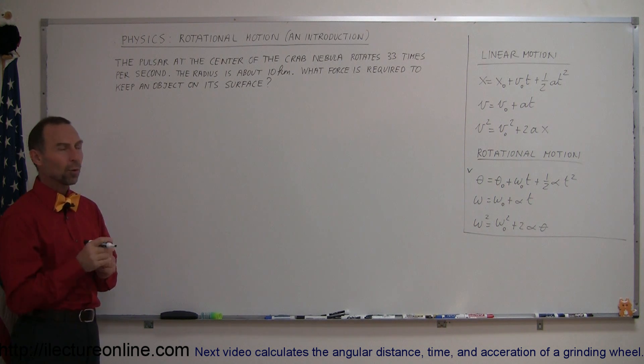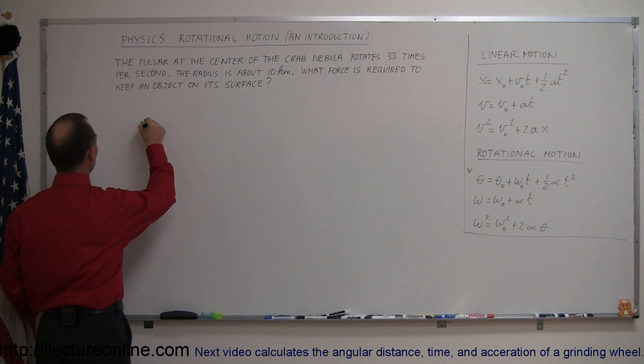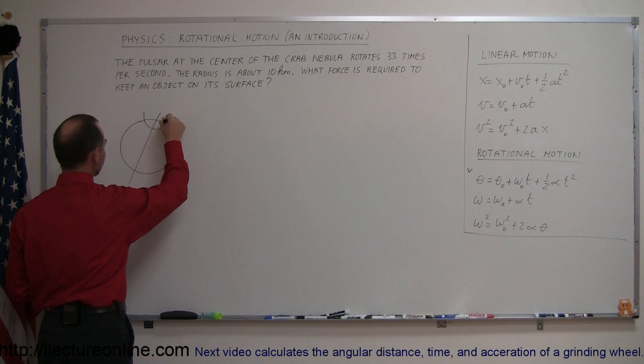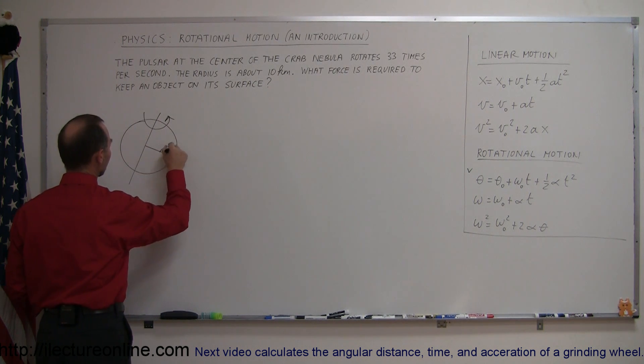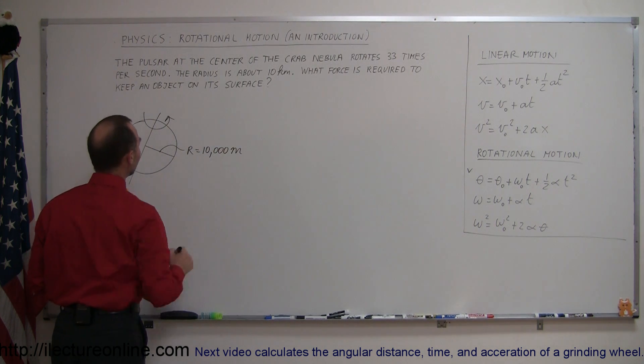So what force is required to keep an object on its surface? Let's draw a little picture of it, so here's a very fast spinning pulsar. Radius is about 10,000 meters, 10 kilometers, about 6 miles.